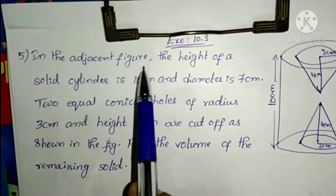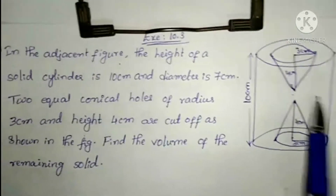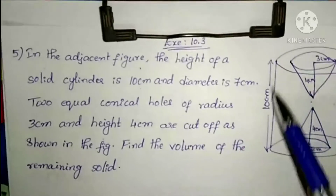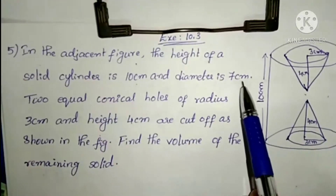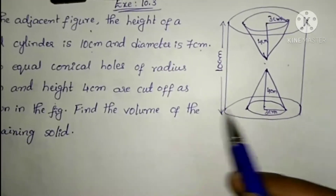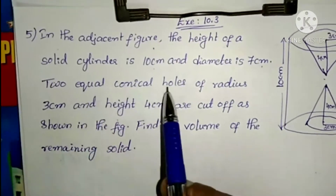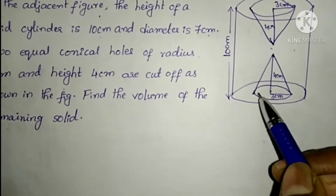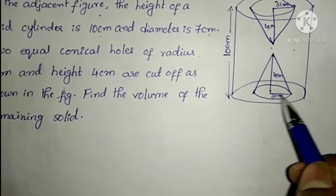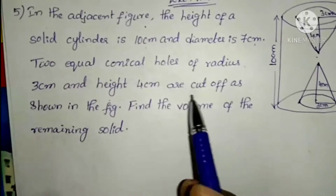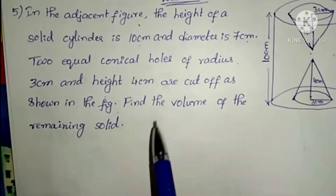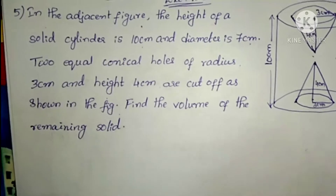The question is: in the adjacent figure, the height of a solid cylinder is 10 cm and diameter is 7 cm. Two equal conical holes of radius 3 cm and height 4 cm are cut out as shown in the figure. Find the volume of the remaining solid.